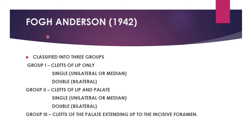The Fogh-Andersen classification from 1942 divides clefts into three groups: Group 1 is cleft of the lip, Group 2 is cleft of the lip and palate, and Group 3 is cleft of the palate extending up to the incisive foramen. Groups 1 and 2 are further subdivided into unilateral and bilateral.